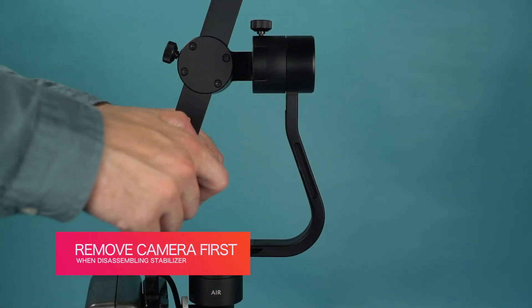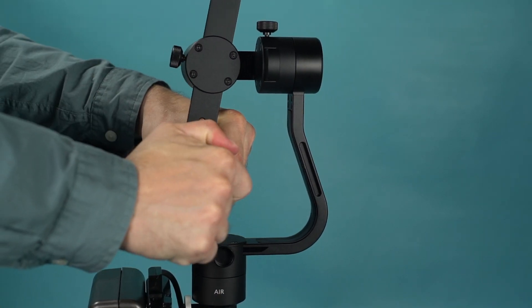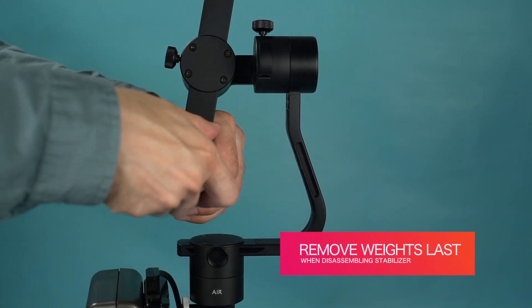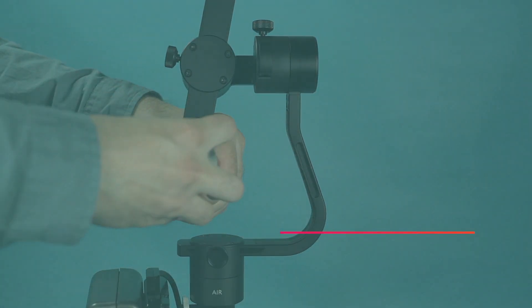When disassembling the stabilizer, remove the camera first. After that, remove the counterweights in small sections you're comfortable with.